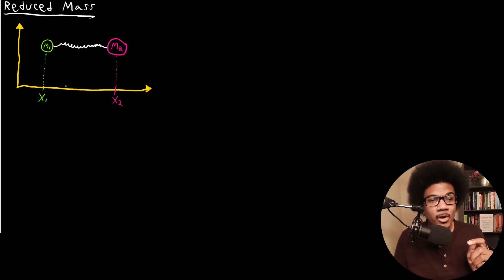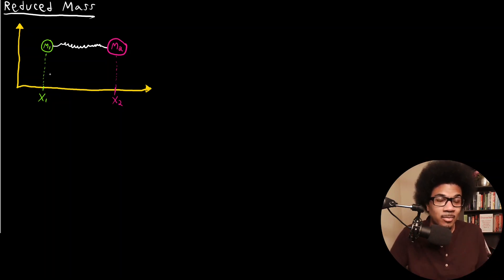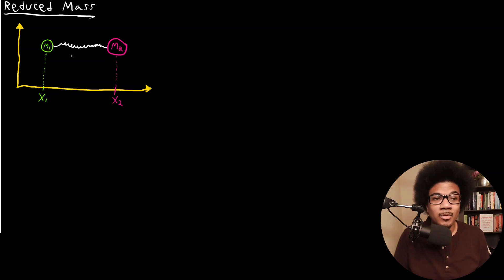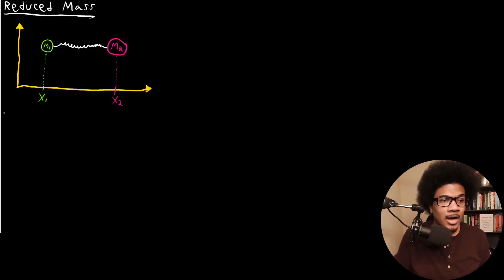The first thing to think about is: what if we just consider an equation of motion for each one of these particles? That's a good place to start, but those equations of motion will be coupled — because since they're attached by this spring, the position of M one will be dependent on the position of M two and vice versa. So we end up with two coupled equations of motion.